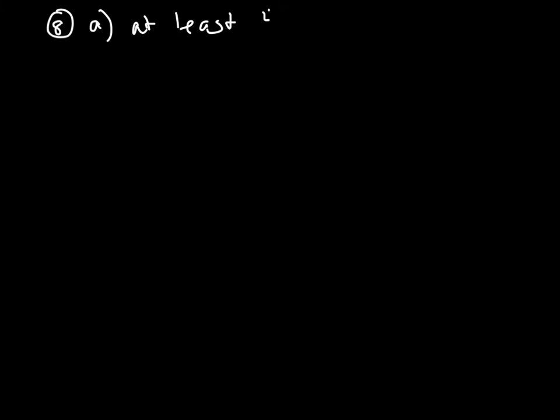Number 8 deals with binomial probability. We use this whenever we see 'at least,' 'at most,' or 'exactly.' Part A wants you to find, to the nearest hundredth, the probability that at least four of the five students will be on a team. 'At least four' means four or more. Since we're only talking about a total of five students, we're really talking about exactly four students or exactly five students. We're going to have to use the binomial probability for both of these.